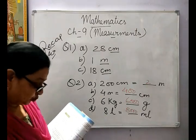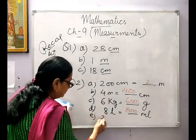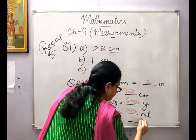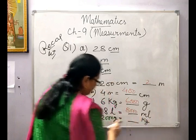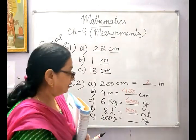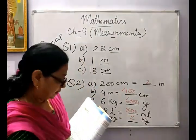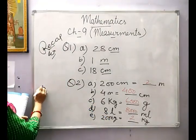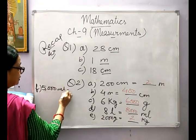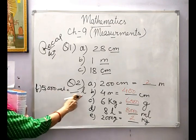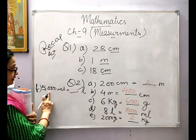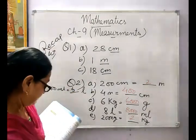E: 2000 grams — you have to convert it into kilograms. Smaller unit to higher unit, so we divide by 1000. The answer will be 2 kilograms. F: 5000 millilitres is equal to dash litres — smaller unit to higher unit. We know there are 1000 millilitres in 1 litre, so we divide. The answer is 5 litres.